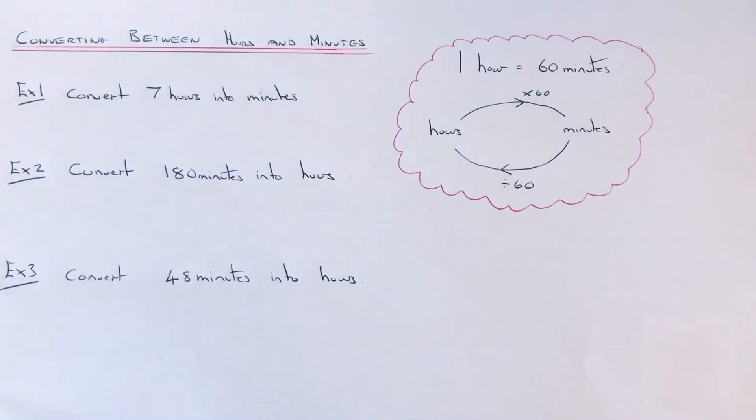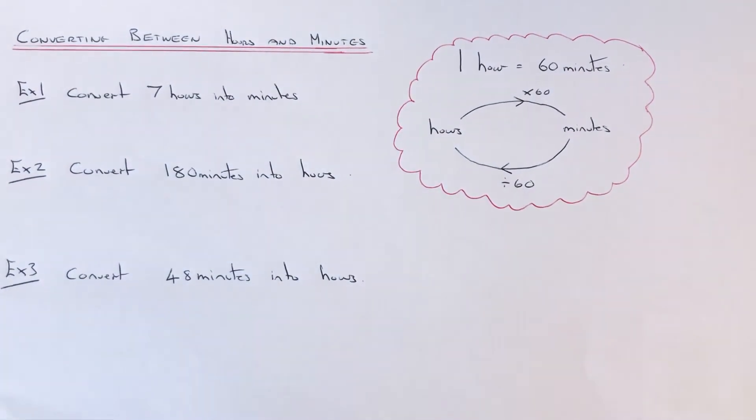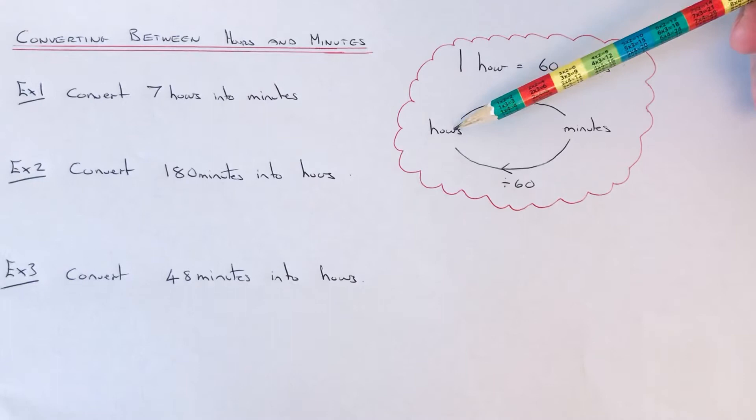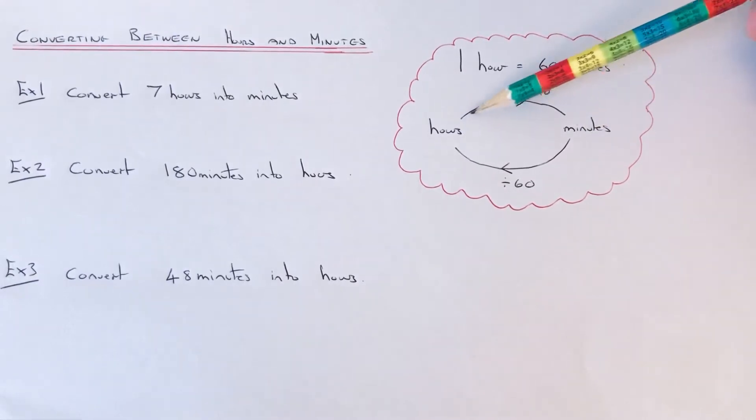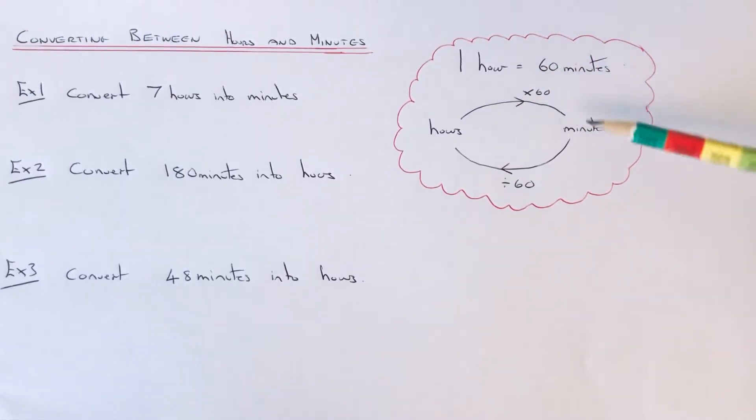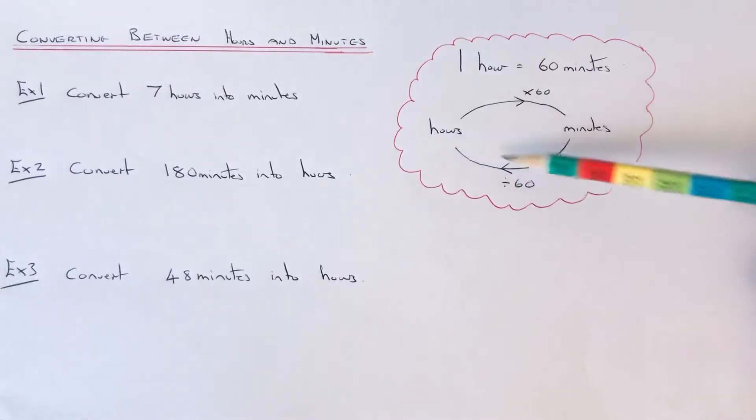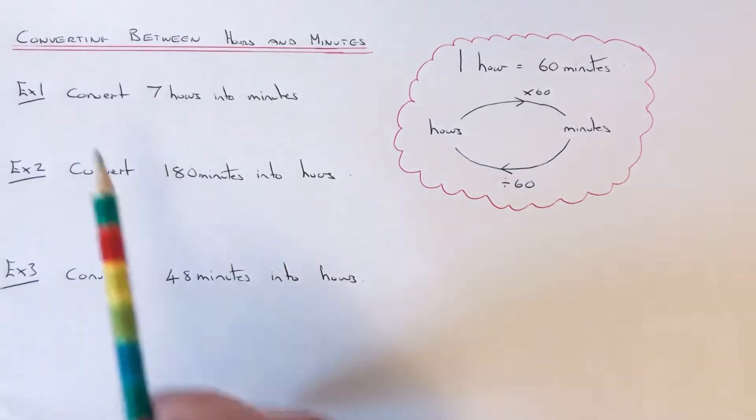Hi guys, welcome back. This is Maths 3000. Today I'm going to show you how to convert between hours and minutes. To do this, you need to know that one hour is the same as 60 minutes. If you're converting hours into minutes, you multiply by 60, and minutes into hours, you divide by 60.